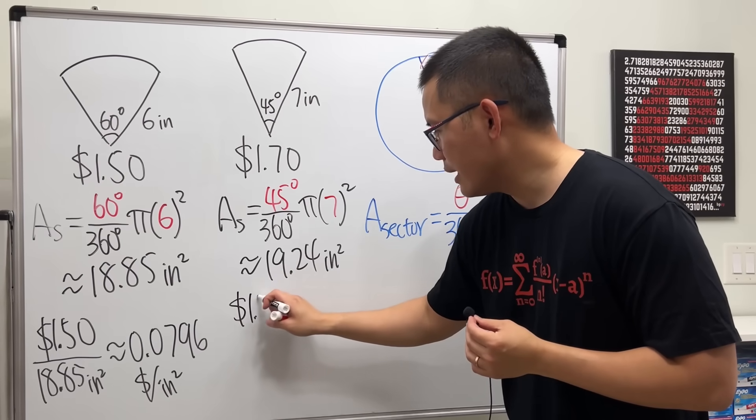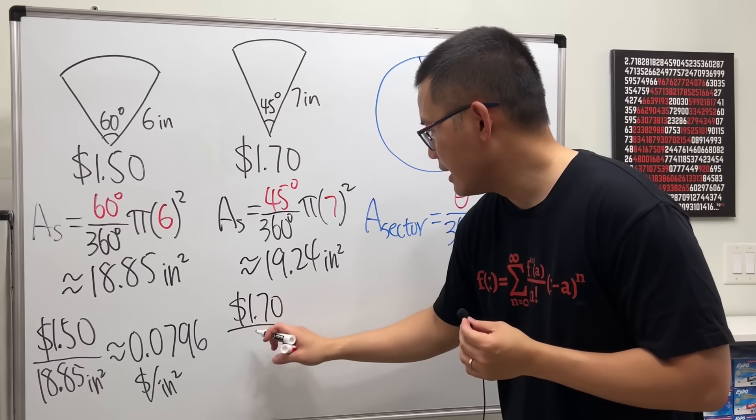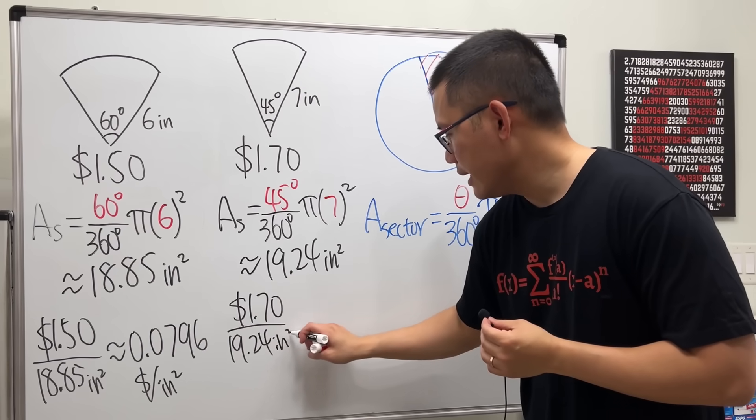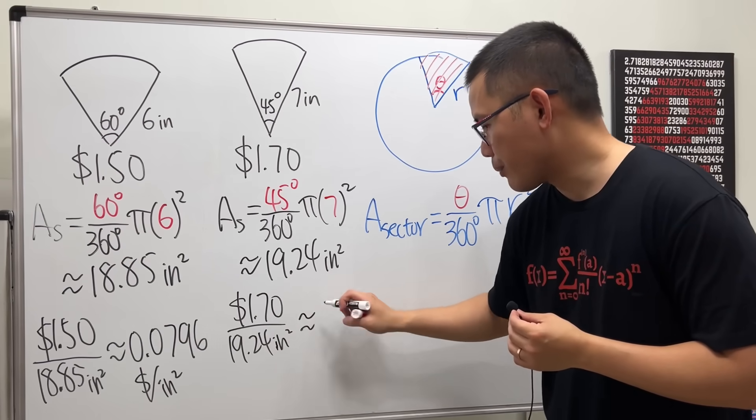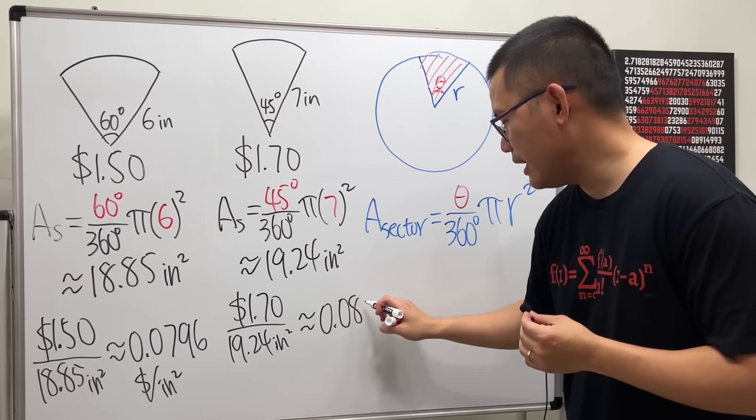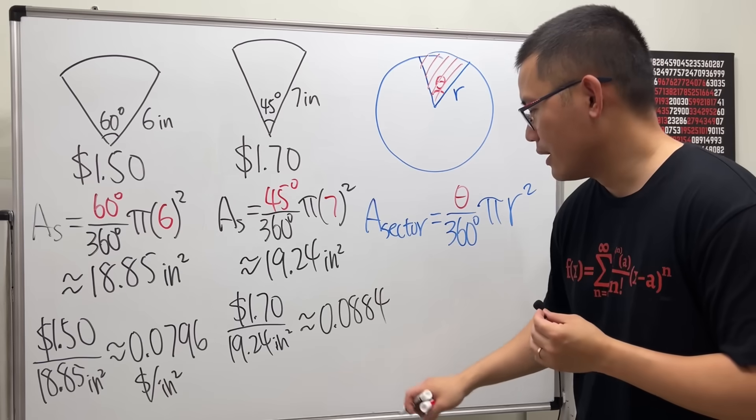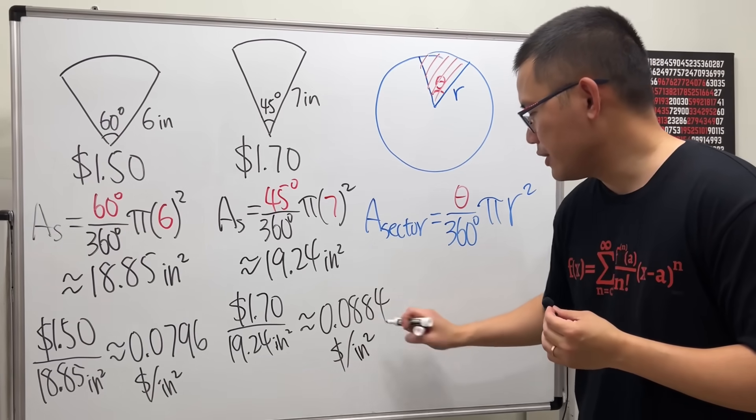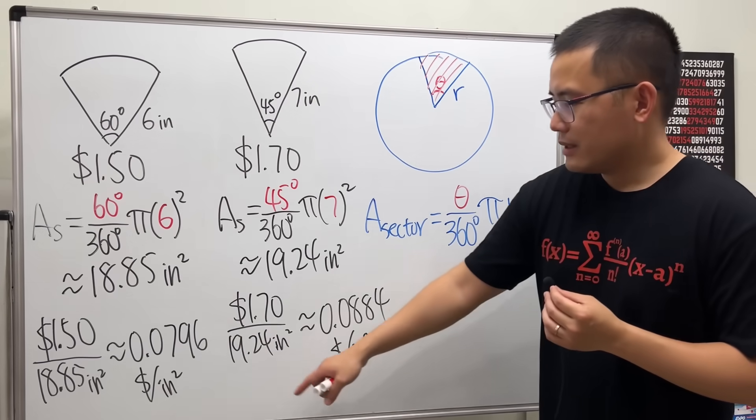And if you do the same thing which is $1.70 divided by the area, in this case we get approximately 0.0884, and the unit for this is dollars per inches squared.